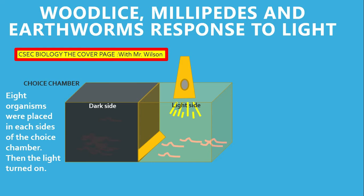We are observing the movement of the organisms, and it is advised that you observe and record. At any time you can stop the video or start all over to ensure your observations are accurate. Please be reminded we started the experiment with 16 organisms — 8 on the dark side and 8 on the light side. We are observing in order to answer our questions and write up the lab for whatever exams you are being assessed in. Remember, it is CSEC Biology, the Cover Page — I am Mr. Wilson, find us on YouTube.